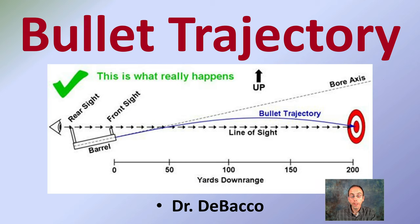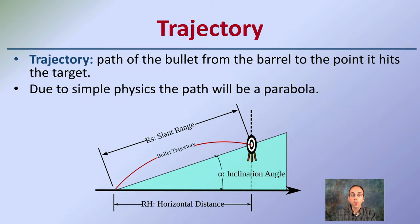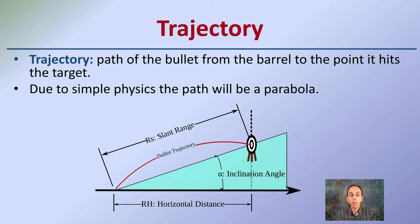Here I want to go over bullet trajectory and a little bit of understanding about this, even though many factors come into play. I'm going to touch on a couple of them just so you get an idea of factors that might influence how a bullet may travel. First off, trajectory is the path of a bullet from the barrel to the point it hits the target. Due to simple physics, the path will be a parabola — it's going to be curved. Even though we like to think about it in a straight line, it's actually curved, and to what degree it's curved depends on a couple of factors.